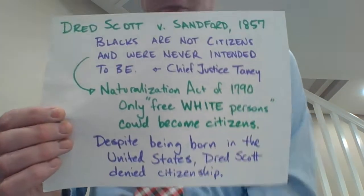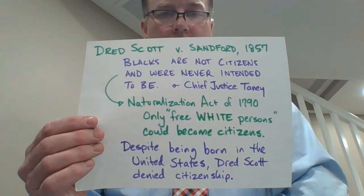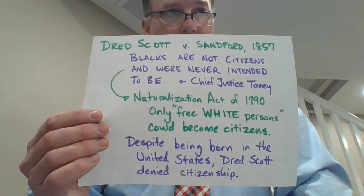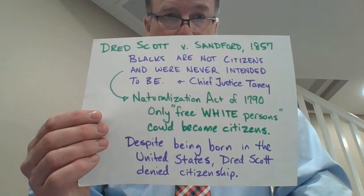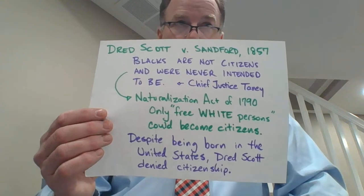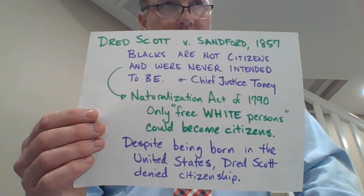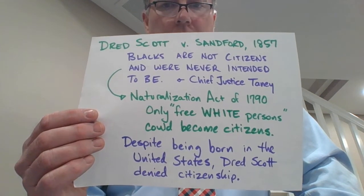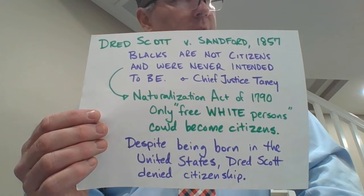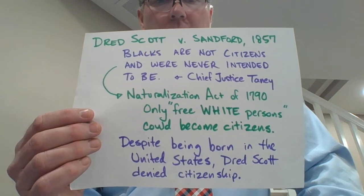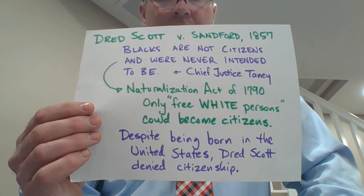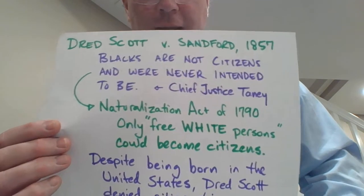Many of you remember from US history that Dred Scott was an enslaved African American who sued for his freedom, challenging that because he had been taken to free states and free territories — both the state of Illinois and the Wisconsin territory of Fort Snelling in what is now the Twin Cities — his enslavement ceased to exist since he had lived in a place where slavery was not legal. He brought his case first in the courts of Missouri, where he lost, and then to the Supreme Court. The Supreme Court ruled that blacks are not citizens and were never intended to be citizens — that was from Chief Justice Taney, who wrote the opinion in the Dred Scott case.